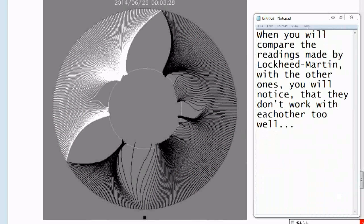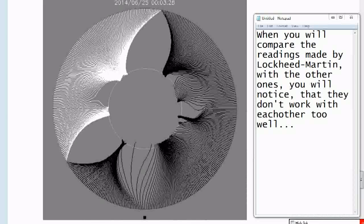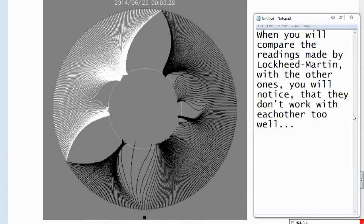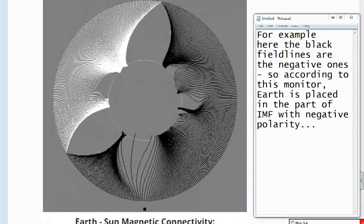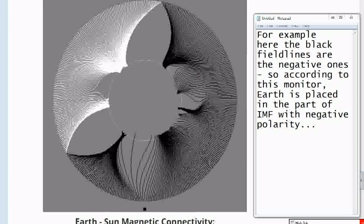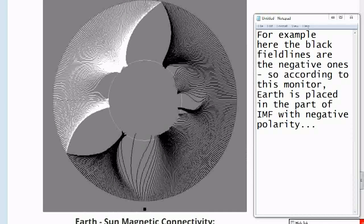When you will compare the readings made by Lockheed Martin with the other ones, you will notice that they don't work with each other too well. For example here, the black field lines are the negative ones. So according to this monitor, Earth is placed in the part of IMF with negative polarity.